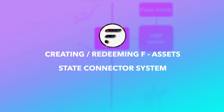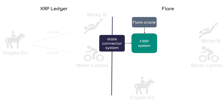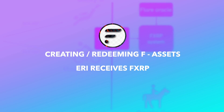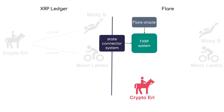The state connector system. The FXRP system receives the state of the XRP ledger from the state connector system. State connector nodes are run independently by every Flare network validator, and they observe the state of an external system in a safe and decentralised manner. Eddy's creation transaction is input to the FXRP system via the state connector system. When the state connector reports that CryptoEri's transaction has been finalised on the XRP ledger, FXRP is minted and sent to the Flare address she specified in the collateral reservation transaction.